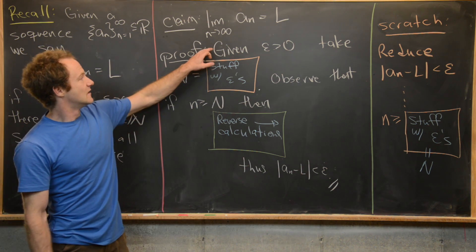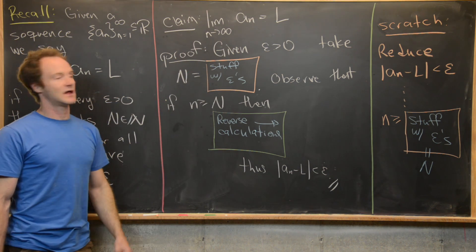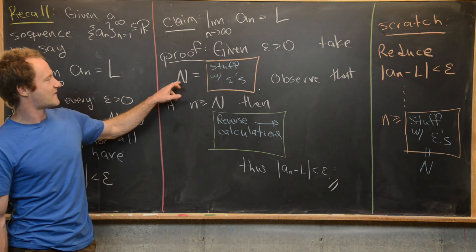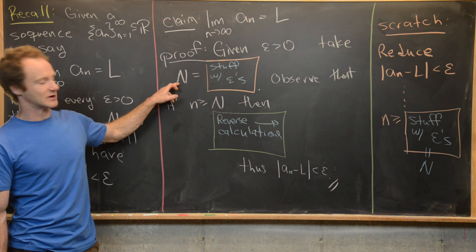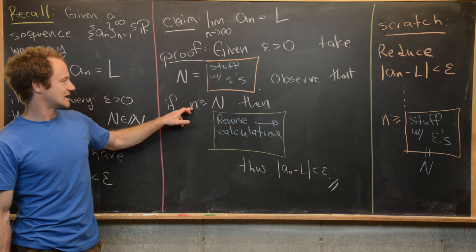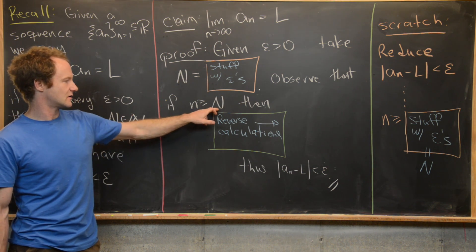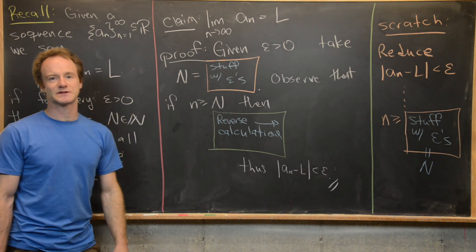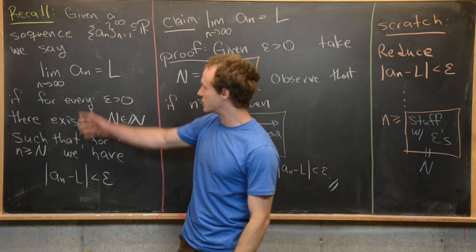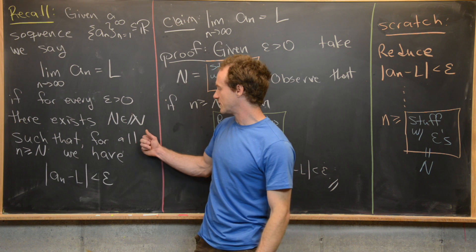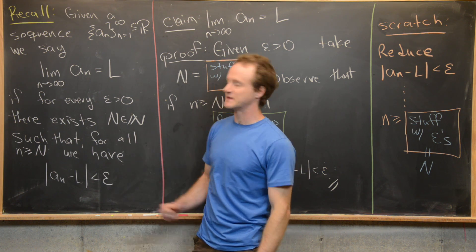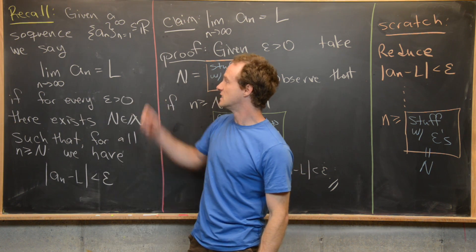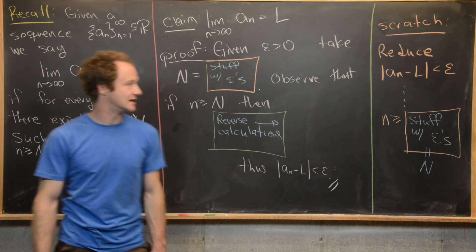Notice: given some arbitrary epsilon greater than zero, you have found a capital N such that if little n is bigger than or equal to capital N, the sequence is within epsilon of L. That is exactly what you need to show the definition is satisfied, so you can say that the limit is L.